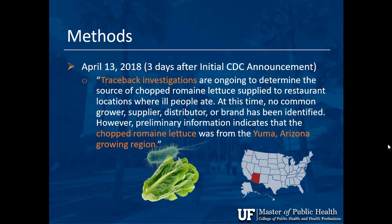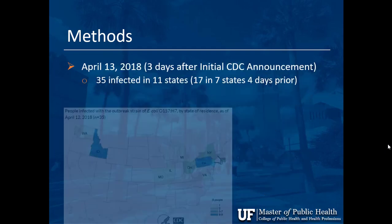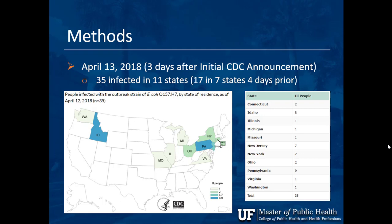April 13 — about three days after the initial CDC announcement — they identified romaine lettuce from the Yuma, Arizona region near the California border as the source. By that update, 35 people were infected in 11 states. New Jersey went from 6 to 7 cases, while Pennsylvania jumped from 2 to 9 — and it ended up being one of the harder-hit states.